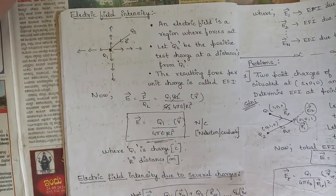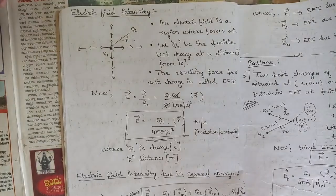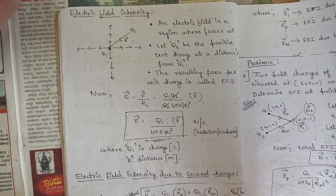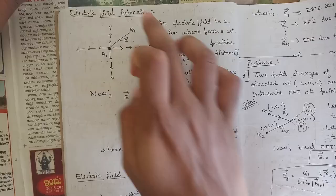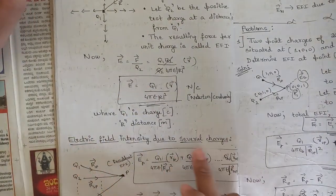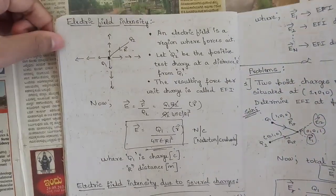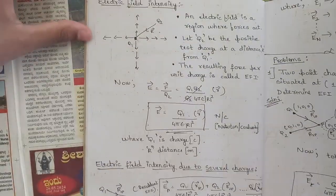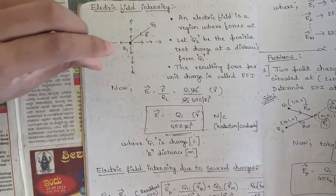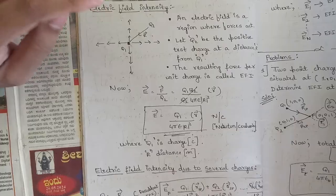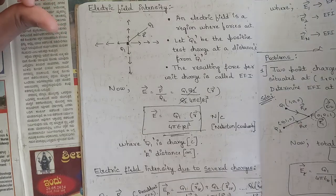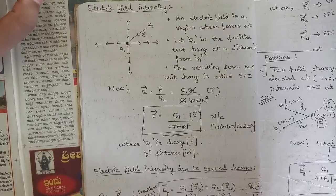The next important concept from Module 1 is Electric Field Intensity — its expression. They will ask many problems related to this. If asked to prove the formula for electric field intensity due to a single point charge or due to several charges, this can be asked for six to seven marks. You need pictorial representation, all point charge vectors, necessary formulas, and notations.